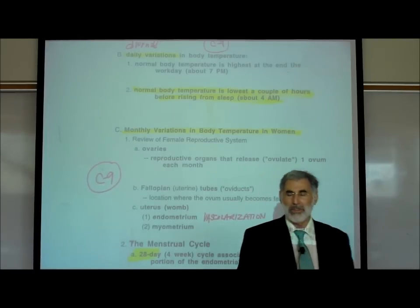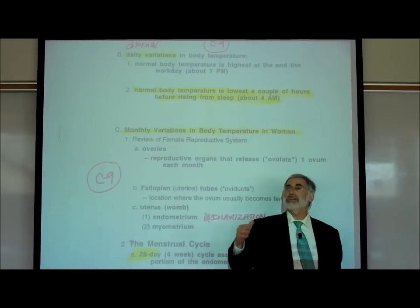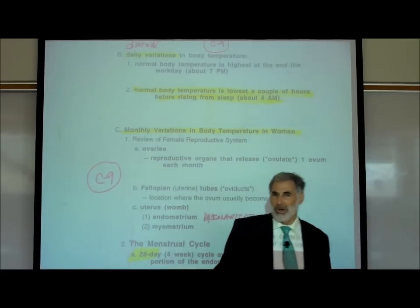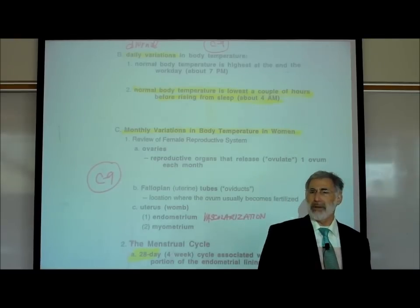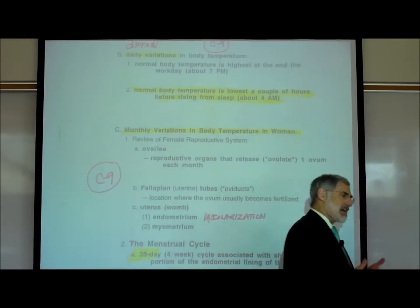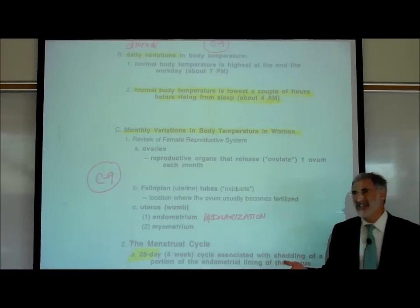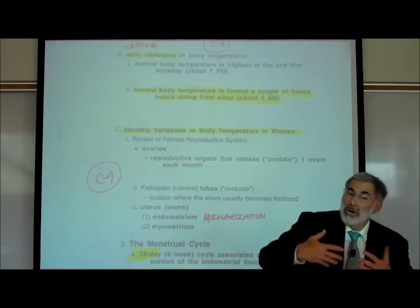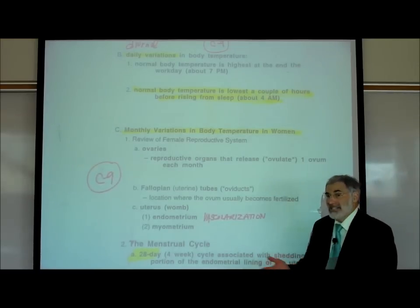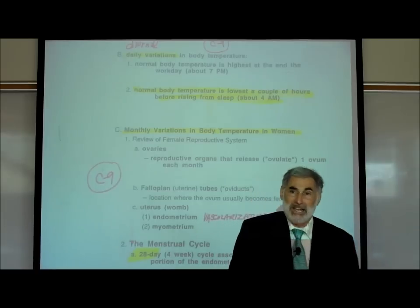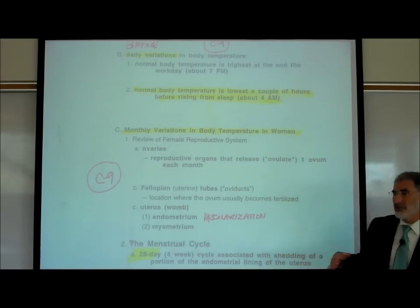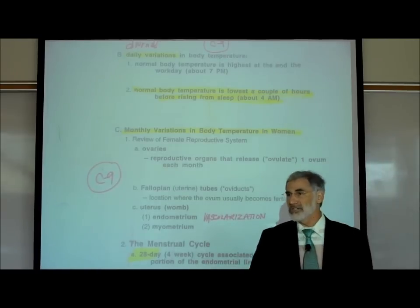Monthly variations in body temperature occur only in women, not in men. The reason is that women's hormone levels change. In men, testosterone levels are essentially constant every single day, so their body temperature is not affected by sex hormones. But in women, estrogen and progesterone hormone levels rise and fall with the changes in the menstrual cycle.